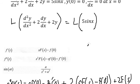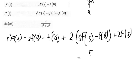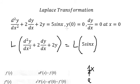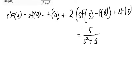Since we have sine of t, we convert it — a equals one, so we put number one here and number one here. We get five over s-squared plus one. Next we apply the initial conditions: this one equals zero, this one equals zero, and this one equals zero. Now we simplify.